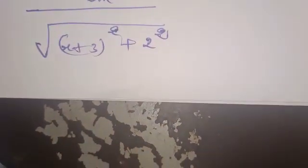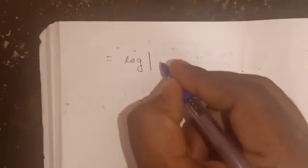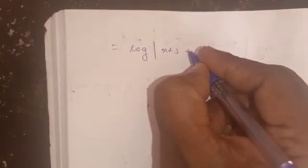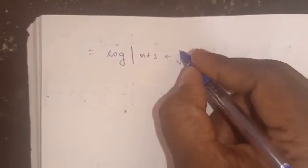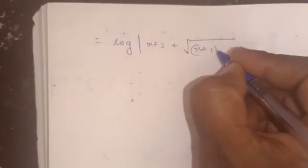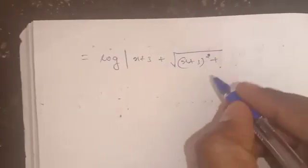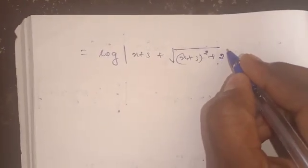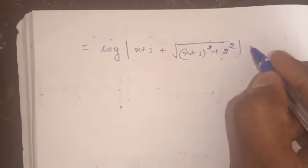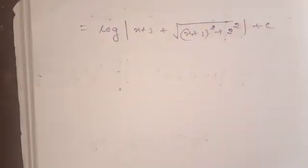So substituting x as (x plus 3), we get log of (x plus 3) plus root of (x plus 3) whole square plus 2 squared, plus c.